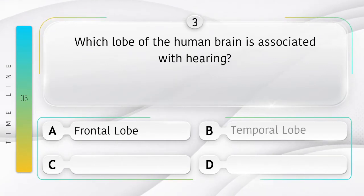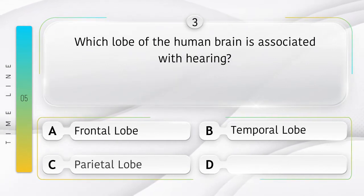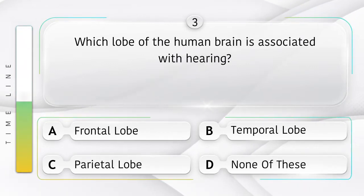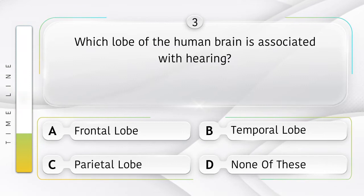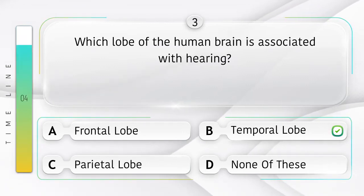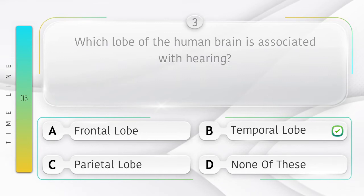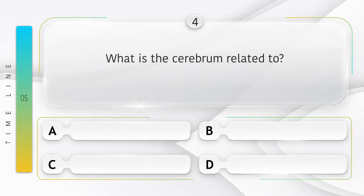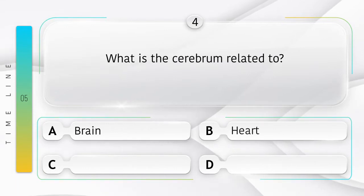Which lobe of the human brain is associated with hearing? Option A: frontal lobe, B: temporal lobe, C: parietal lobe, D: none of these. Answer is option B: temporal lobe.